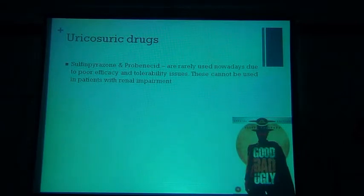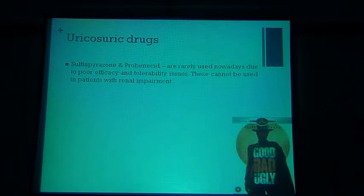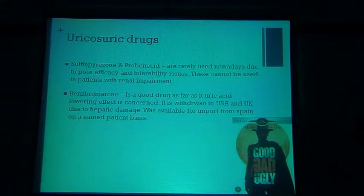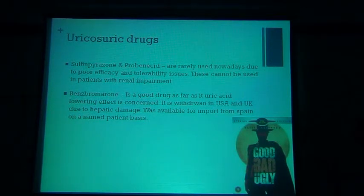Uricosuric drugs such as probenecid and sulfinpyrazone have been used in the past, but their use is waning — they are not very efficacious and have lots of side effects, and cannot be used in people with renal impairment. Benzbromarone is a very good uricosuric that can be used in renal problems, but it causes hepatic damage and is not approved for use in the USA or UK, though it is available on a named-patient basis from Spain.